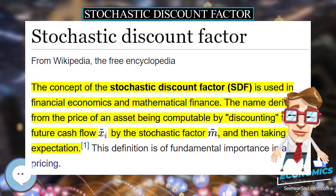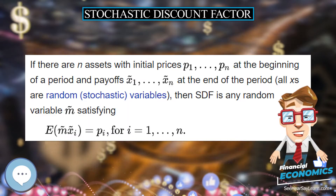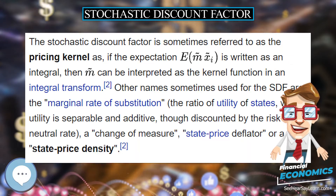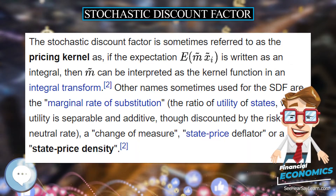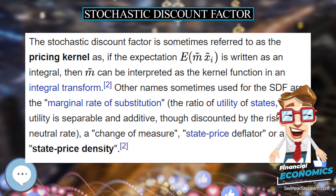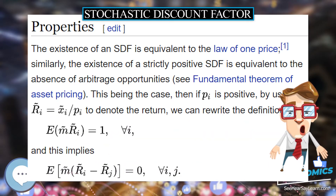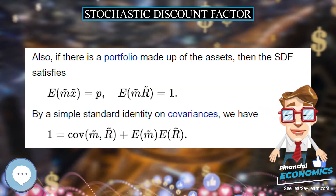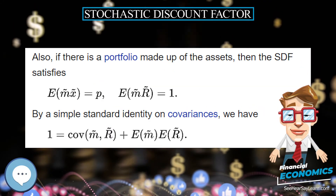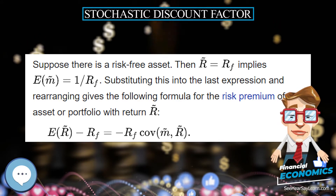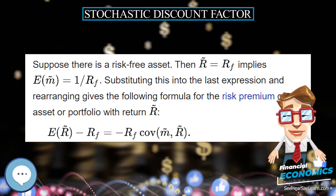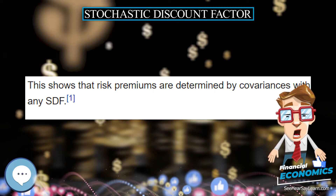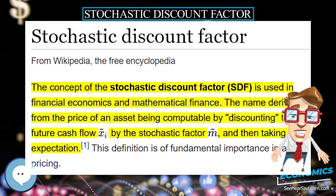The Stochastic Discount Factor, or SDF, is a concept in financial economics and mathematical finance. The name reflects the fact that the price of an asset can be computed by discounting the future cash flow X_i by the stochastic factor M, and then taking the expectation. This definition is of fundamental importance in asset pricing.